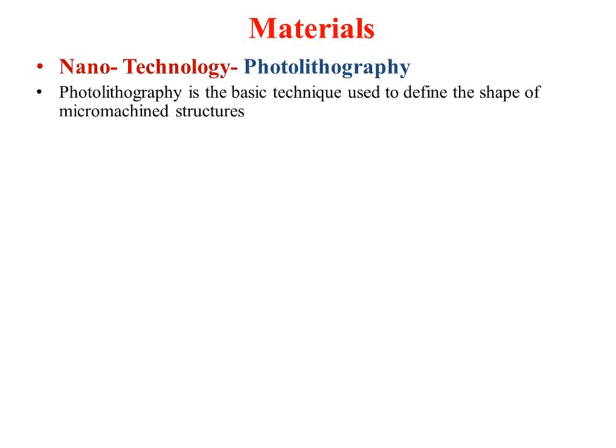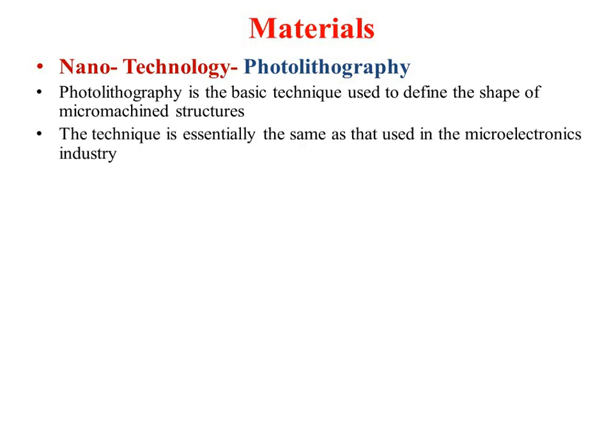Photolithography is the basic technique used to define the shape of micromachined structures. The technique is essentially the same as used in the microelectronics industry. It is similar to PCB manufacturing — you first prepare the PCB layout and then install components. You must initially develop your structure design, which is then carved or micromachined using silicon micromachining, excimer laser, or LIGA techniques.